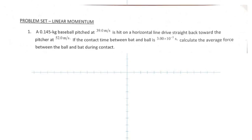The first question talks about a baseball pitched at 39 meters per second and hit straight back at 52 meters per second. That is an important word — 'hit straight back' — which means the velocity is in the opposite direction. The time of contact between the bat and ball is given, and we have to calculate the average force between the ball and the bat during contact.